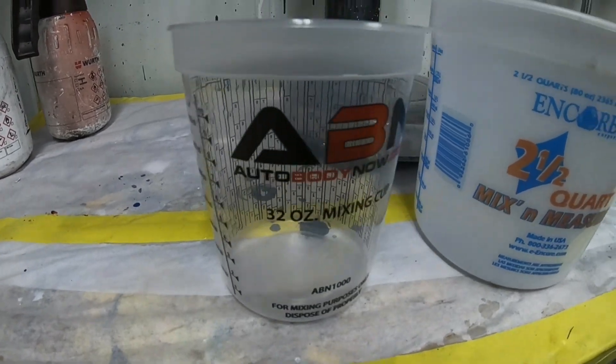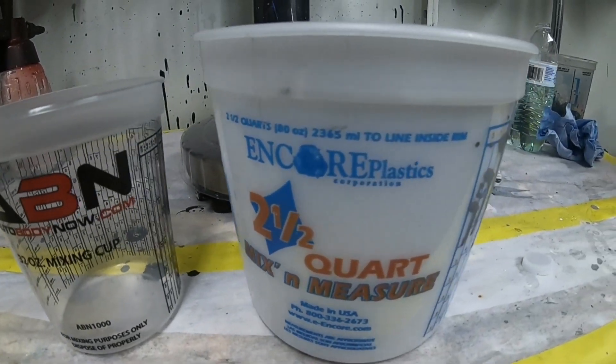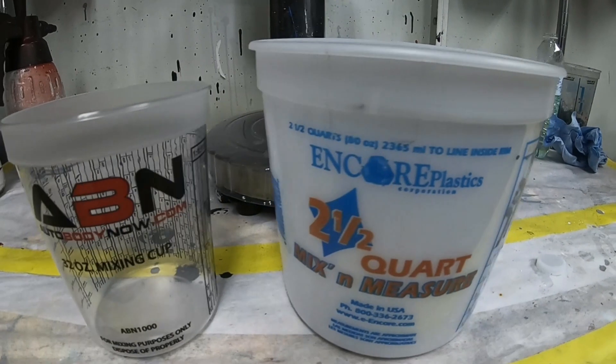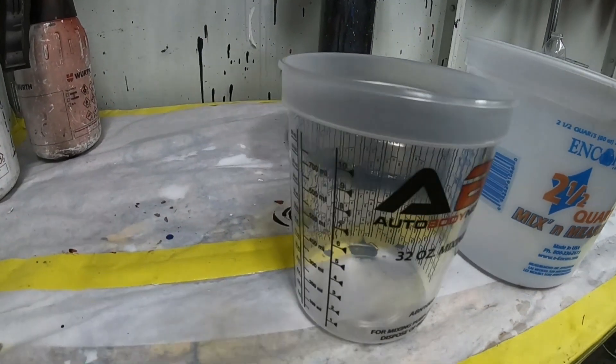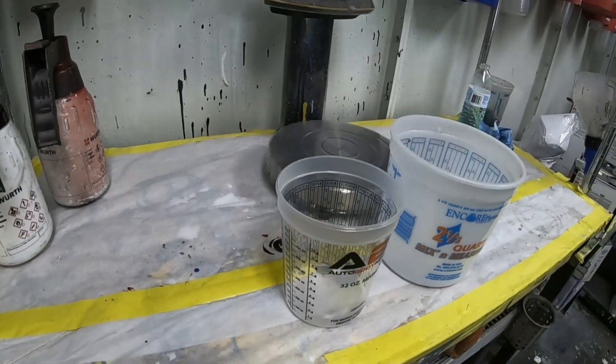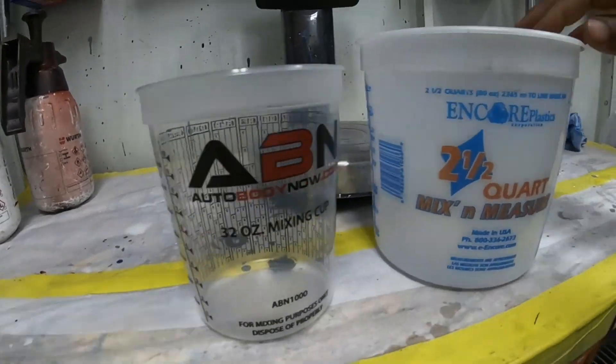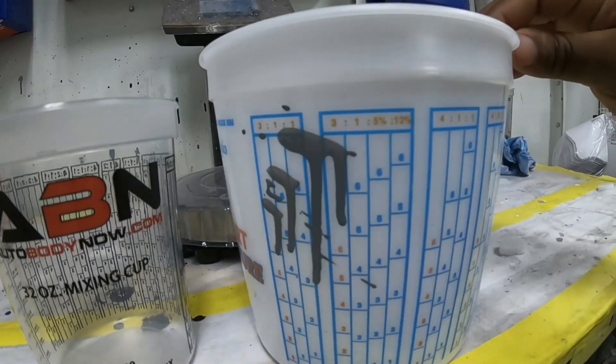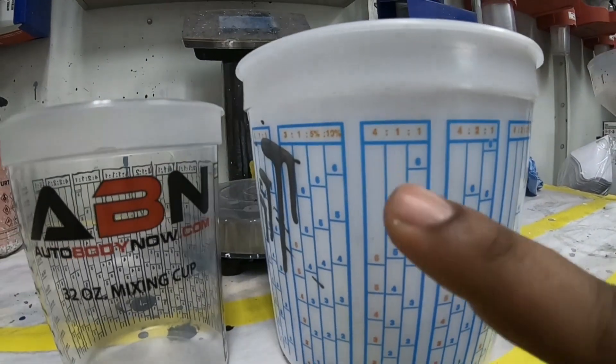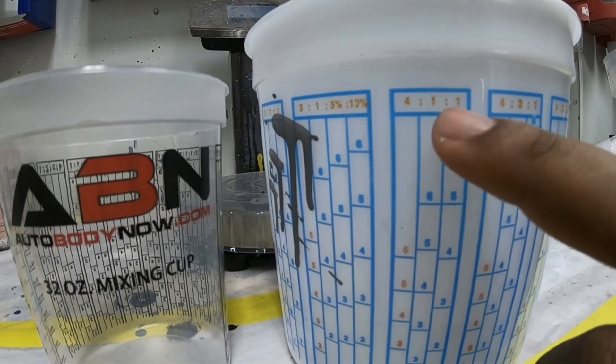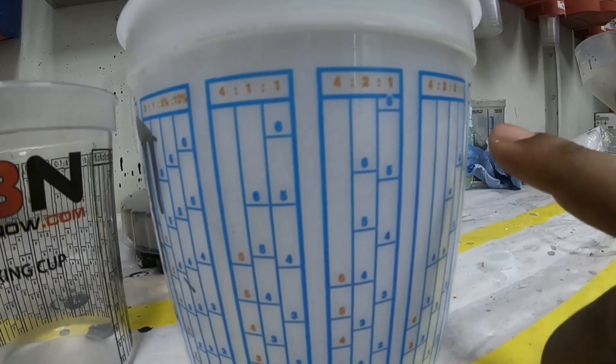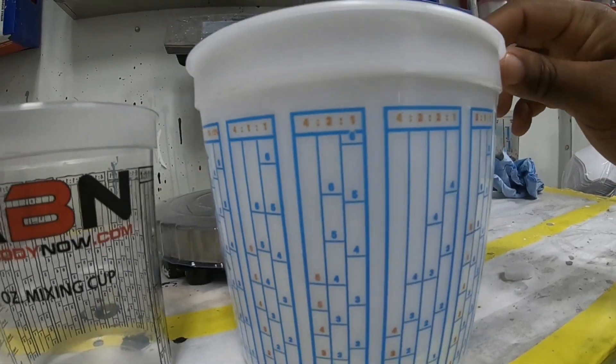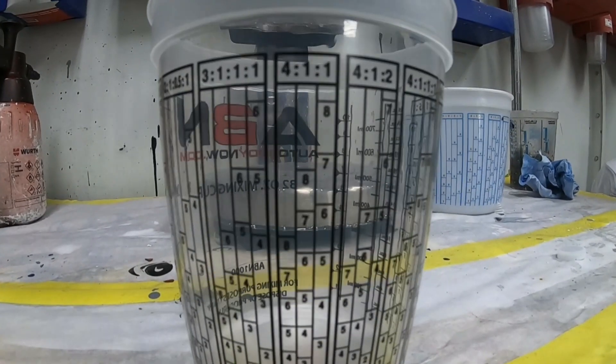Alright guys, let's dive into it. These are the two mixing cups that I'll be using to demonstrate how to mix a 4 to 1 and then a 1 to 1 mix ratio. We all know there are different styles of cups, different brands. You can see the mix ratios on the top says 4-1-1, 4-2-1, and so forth. Alright guys, let's get started.